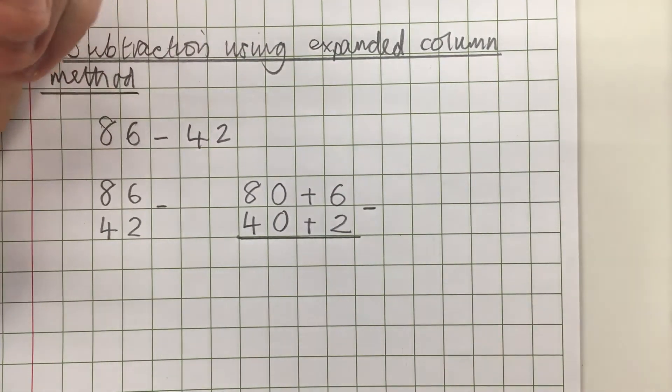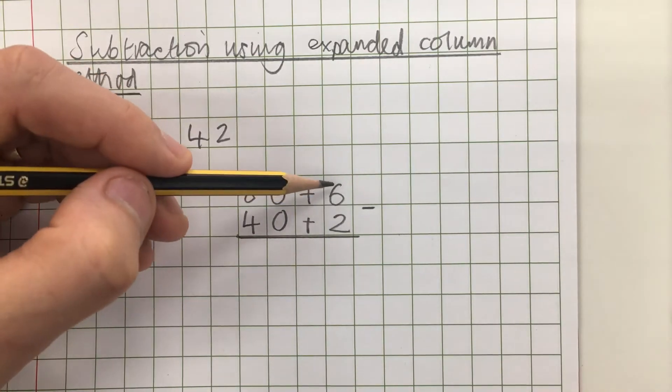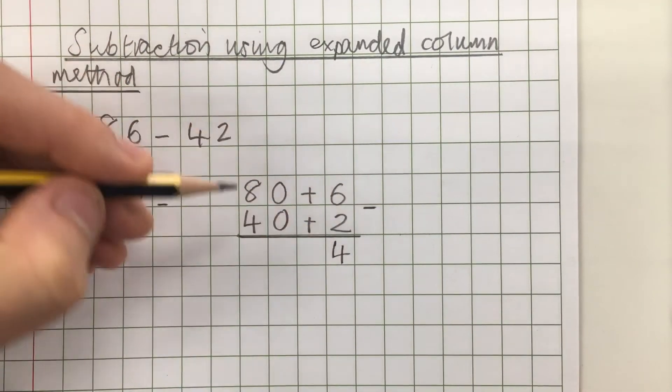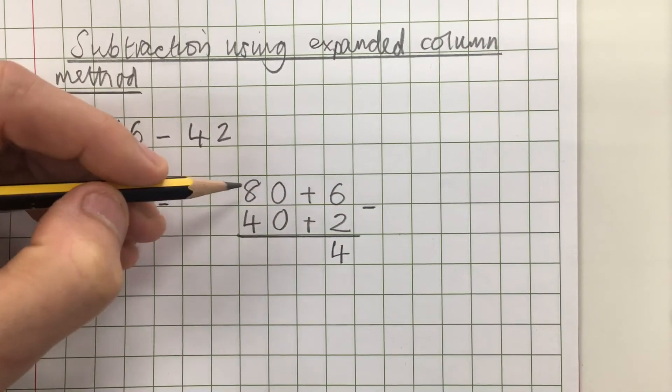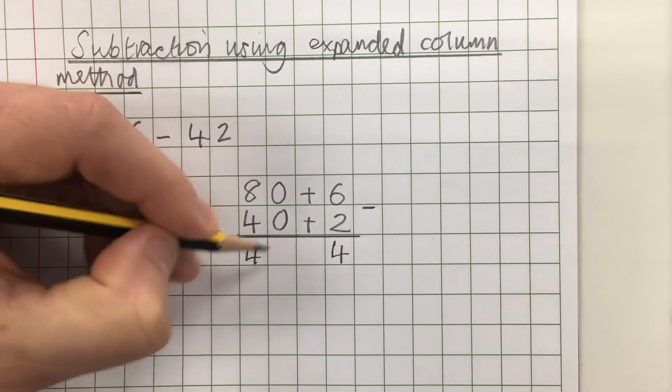And now I've got the number partitioned I'm going to subtract each part. So these are the ones so 6 minus 2 is 4 and 80 minus 40. Well I know 8 minus 4 is 4 so 80 minus 40 is going to be 40.